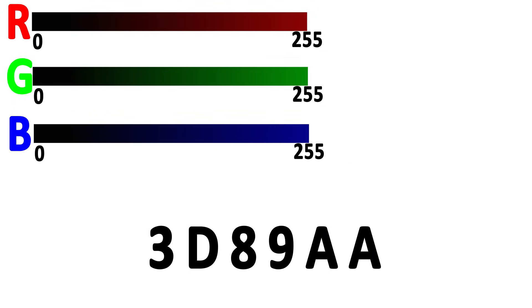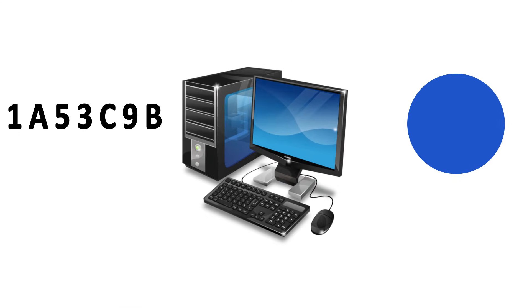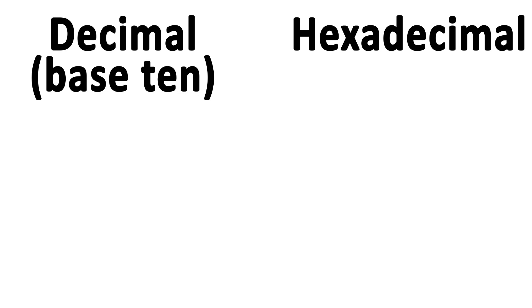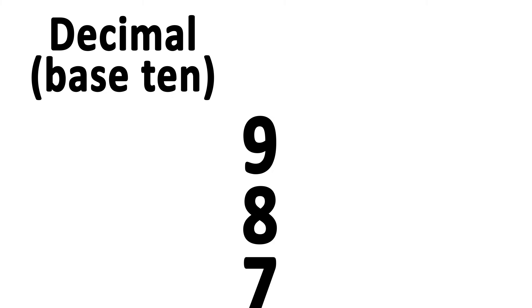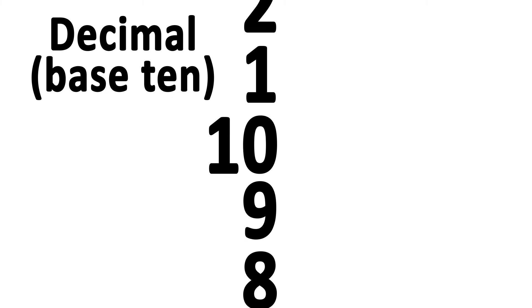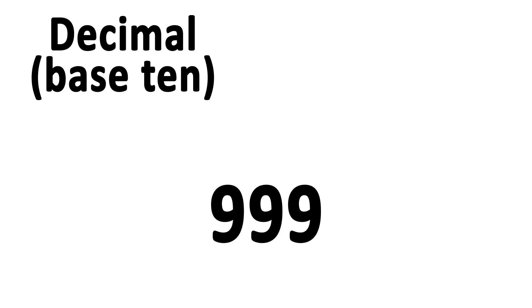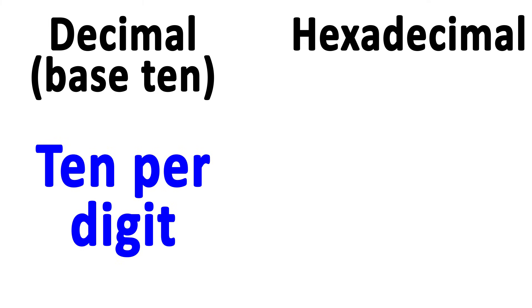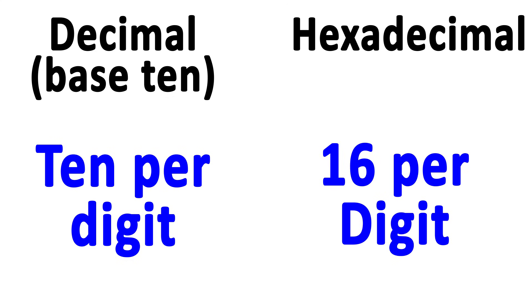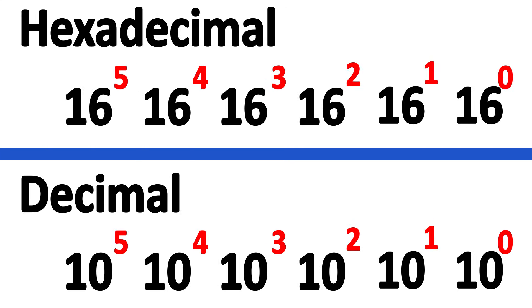To figure out how a computer turns a number into a color, we need to first look at hexadecimal. Base 10 is the counting system we all use — we have the numbers 0 through 9, and once we reach 9, we add a digit to the left and start over. Hexadecimal works the same way, but instead of 10 values per digit as in decimal, or 2 as in binary, it has 16 symbols per digit. Each digit to the left represents an increasing power of 16 rather than 10.